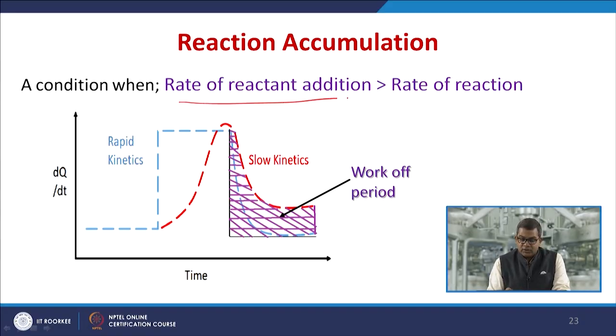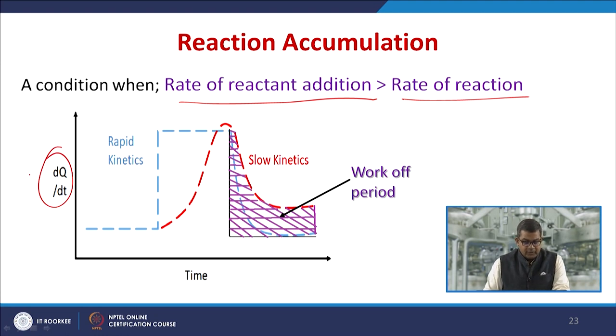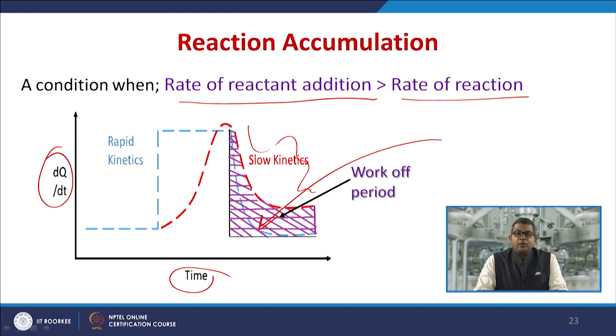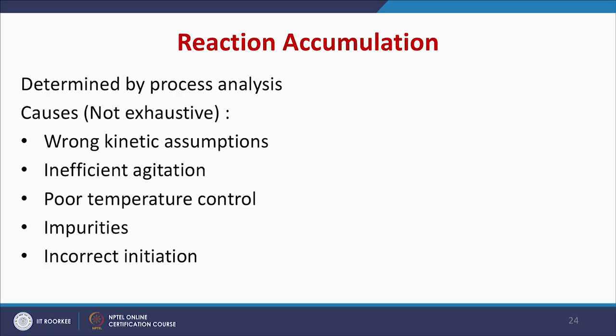Reagent accumulation is a condition when the rate of reactant addition is more than the rate of reaction. You need to plot dQ/dt versus time. Initially you may experience rapid reaction growth and then there may be a scenario of slow kinetics — this is the zone where you can think about the work-up period. This is usually determined by process analysis.